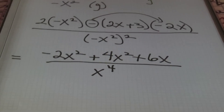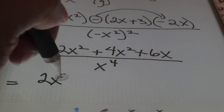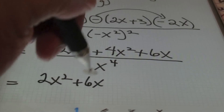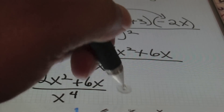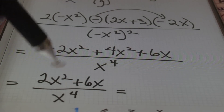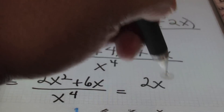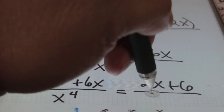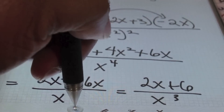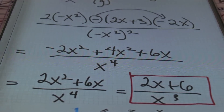From there I can combine like terms. Negative 2x squared plus 4x squared gives me positive 2x squared, plus 6x, all divided by x to the fourth power. This is a rational expression, so I'm still responsible for simplifying. All three elements can be reduced by x to the first power, giving me 2x + 6 all over x to the third power. And this, ladies and gentlemen, is my derivative. So 2x + 6 divided by x cubed is the result.